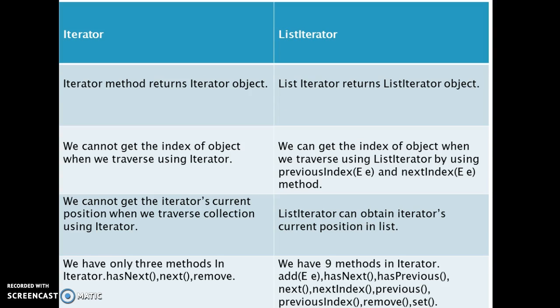Next, the iterator() method returns an iterator object, and the listIterator() method returns a list iterator object.